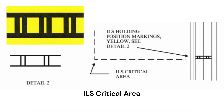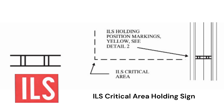The black stripes that look like a sideways ladder with a yellow background indicate an ILS critical area as shown. The red sign with the white letters ILS indicates a holding sign for an ILS critical area.